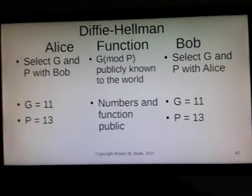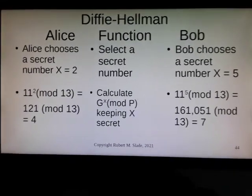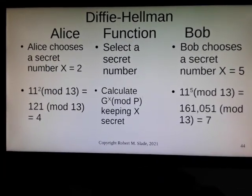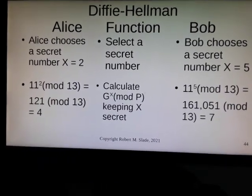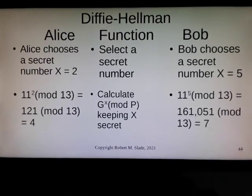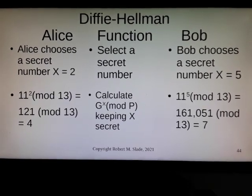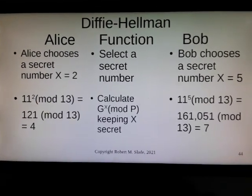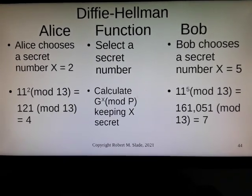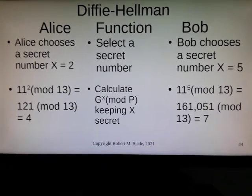Alice chooses a secret number x — in this case she chooses 2. Bob chooses a secret number x — in this case he chooses x equals 5. This is used in the function G to the power of x mod P.